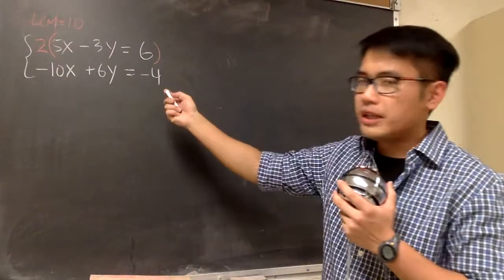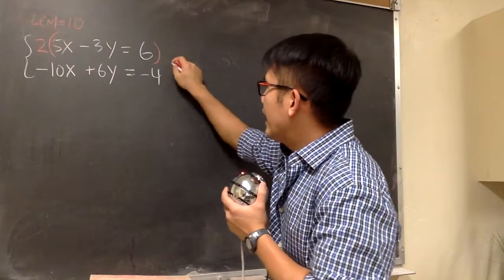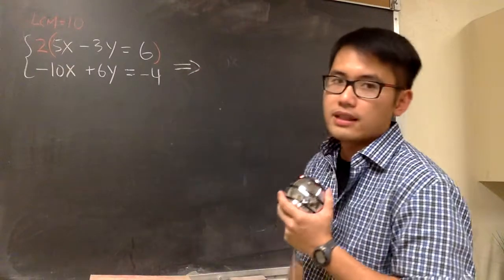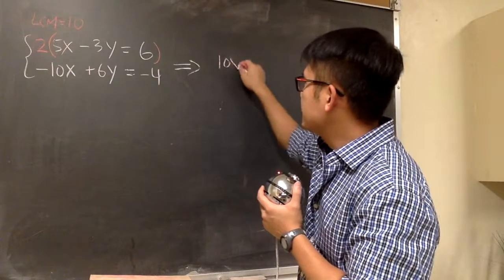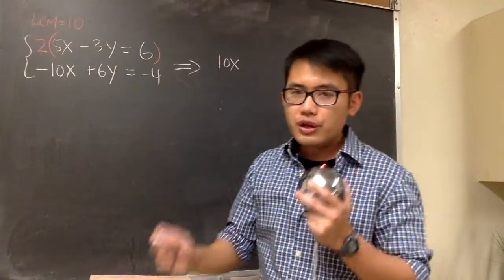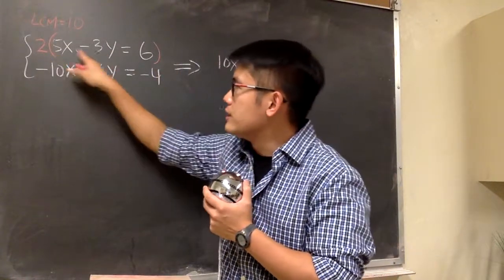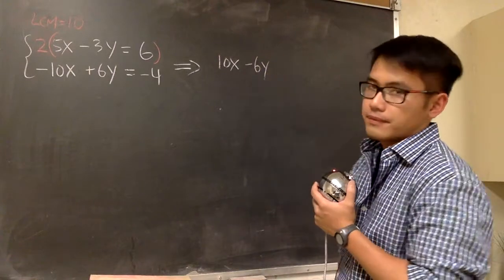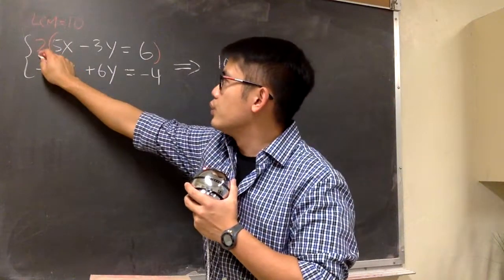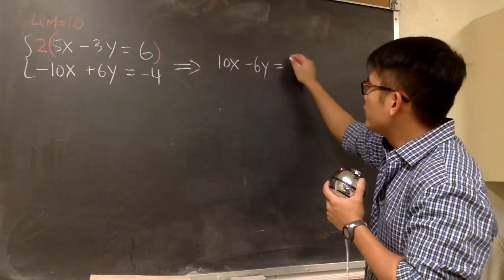And when we are doing the elimination, this is how we should organize our work. Start from the left and move to the right. We see 2 times 5x, that will give us positive 10x, and be sure to distribute the 2 into everything. We also multiply the 2 with negative 3y, that will give us negative 6y, and we will have 2 times 6, that's 12. So this is equal to 12.